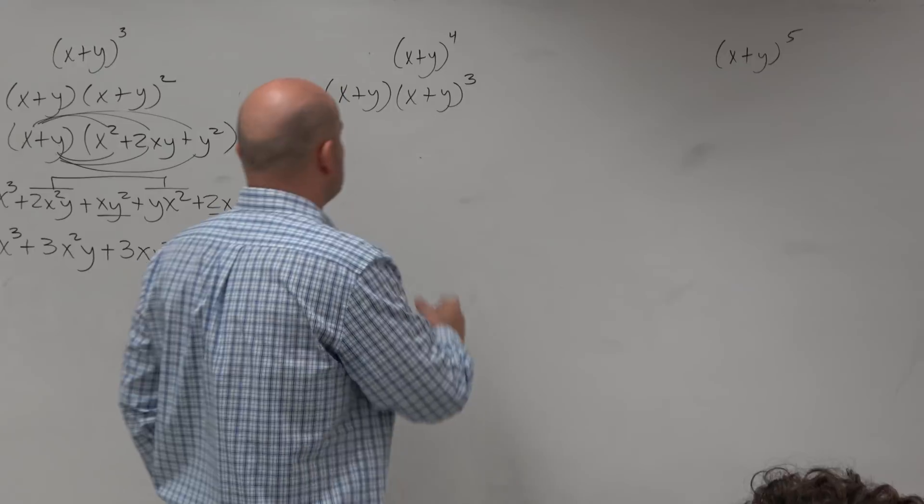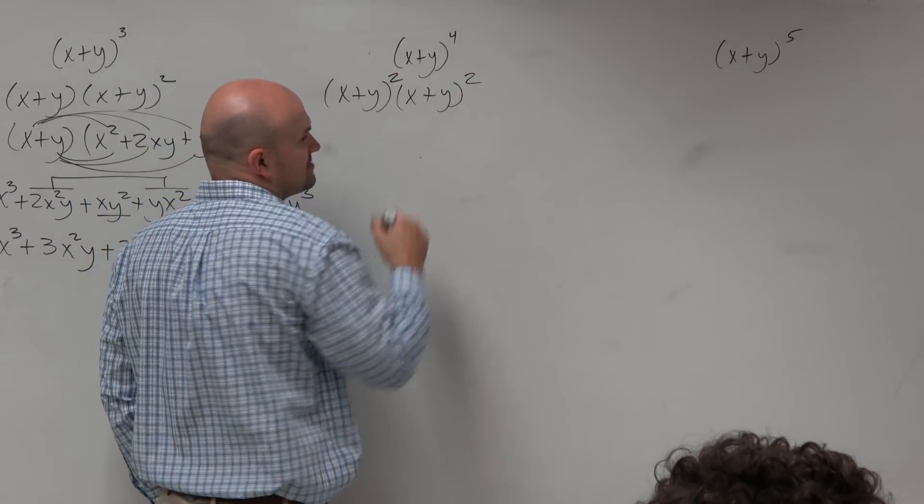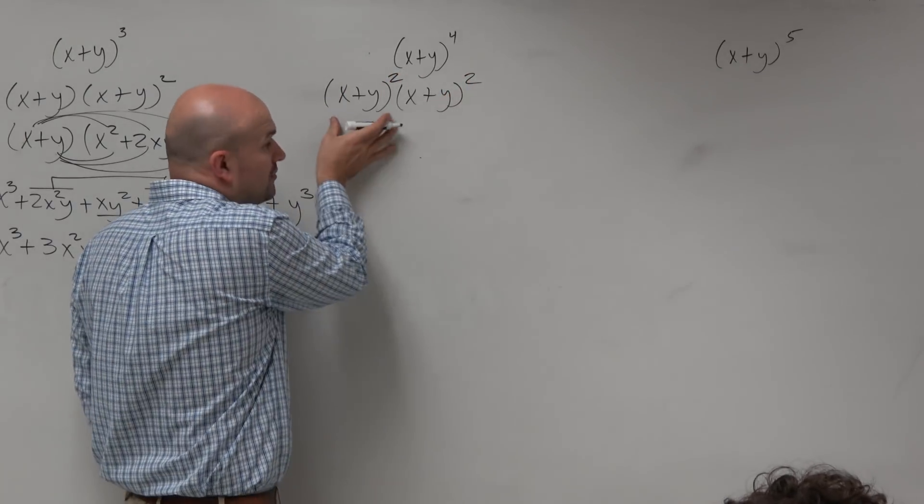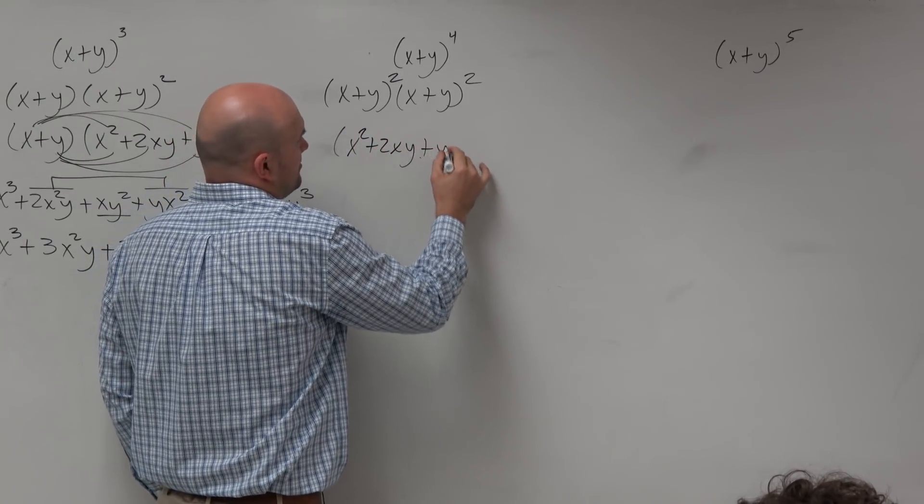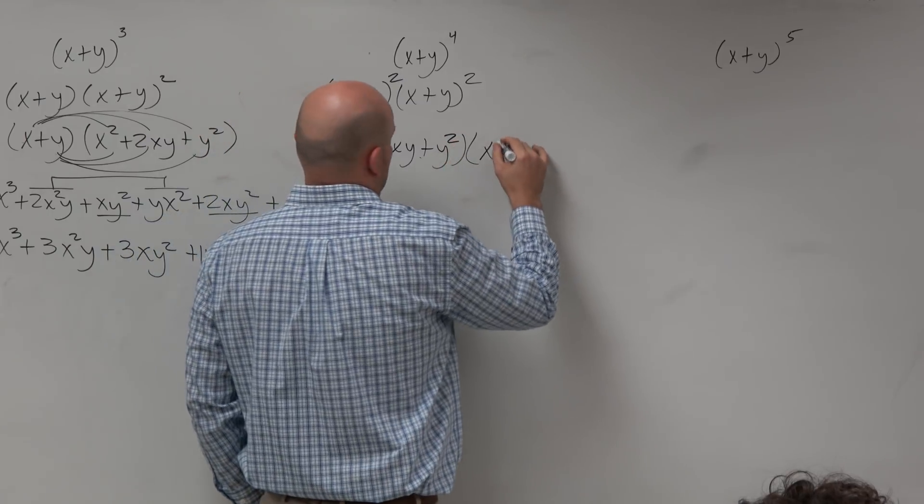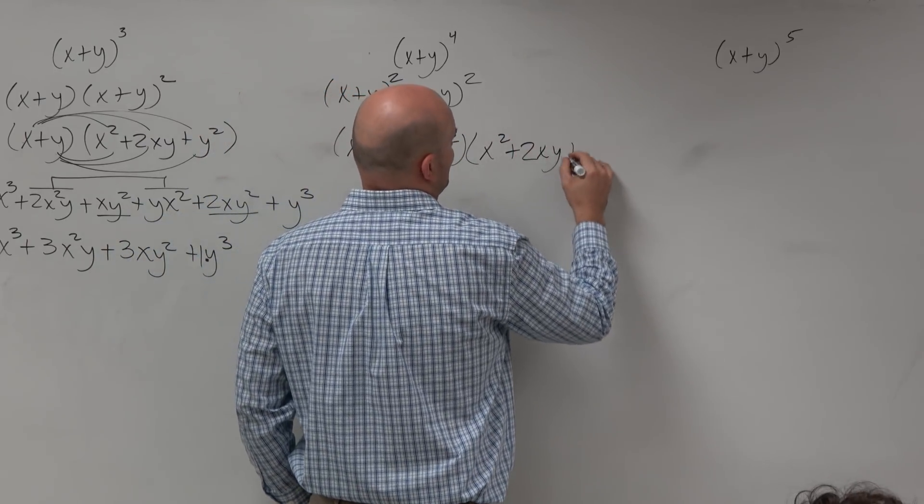So what I would do is I would rewrite this as (x+y) squared times (x+y) squared. So these, again, I can do these rather simply: x squared plus 2xy plus y squared times x squared plus 2xy plus y squared.